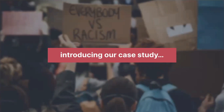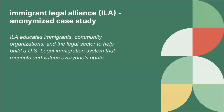Throughout this workshop we're going to be using a case study as a way to follow along with these questions and give real world examples of how things work. As far as my research shows, there's no organization called Immigrant Legal Alliance — we're calling it ILA for short. I wanted to come up with an anonymized name. ILA educates immigrants, community organizations, and the legal sector to help build a U.S. legal immigration system that respects and values everyone's rights. This fictitious organization is what we'll follow through the rest of this workshop.